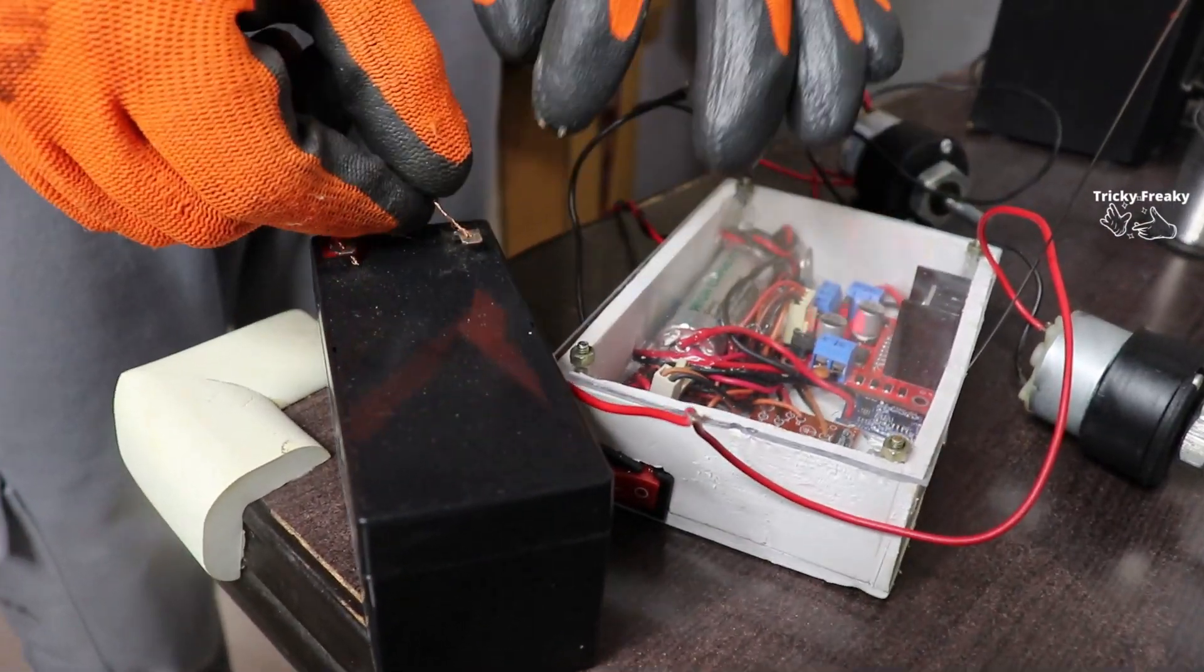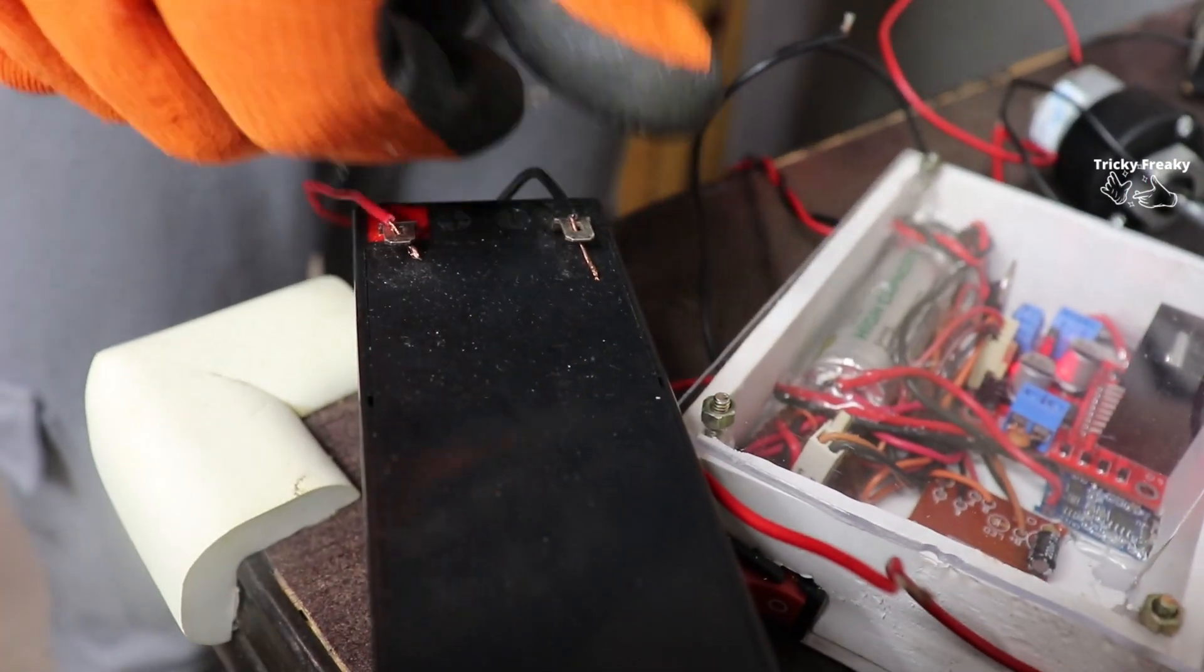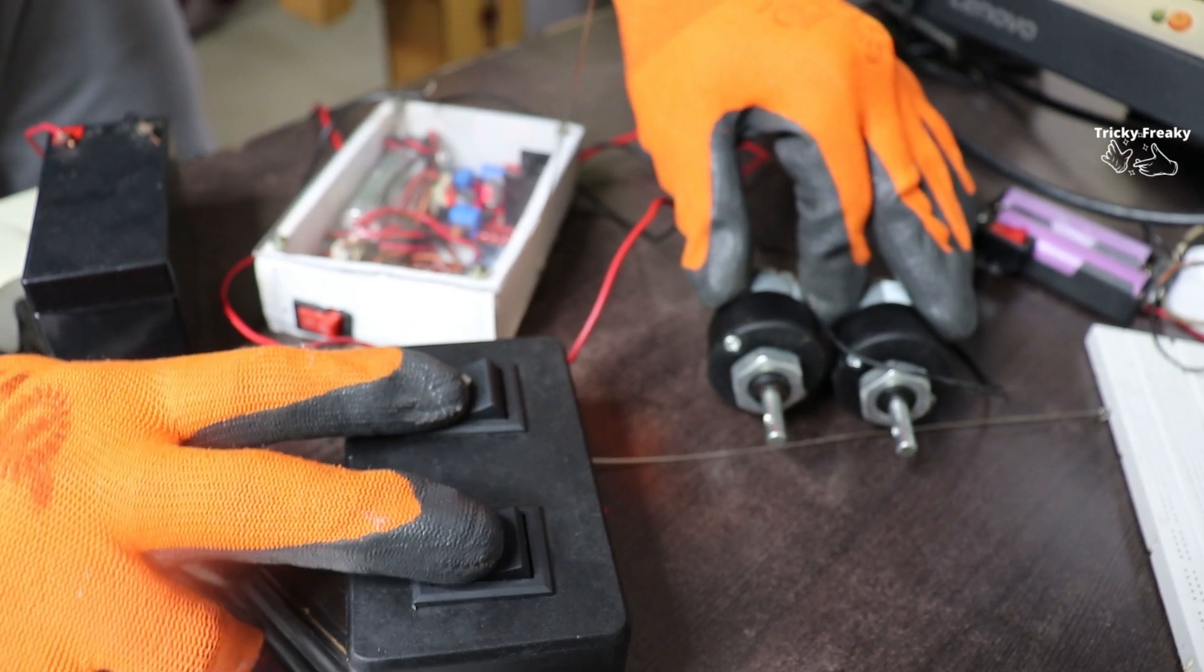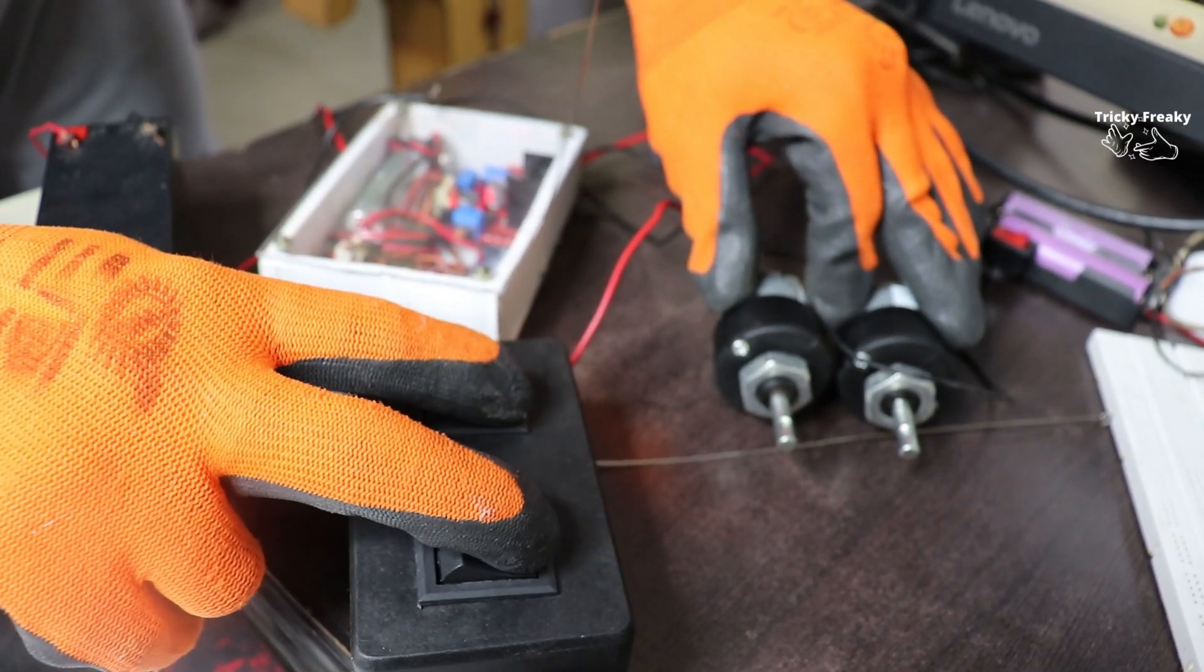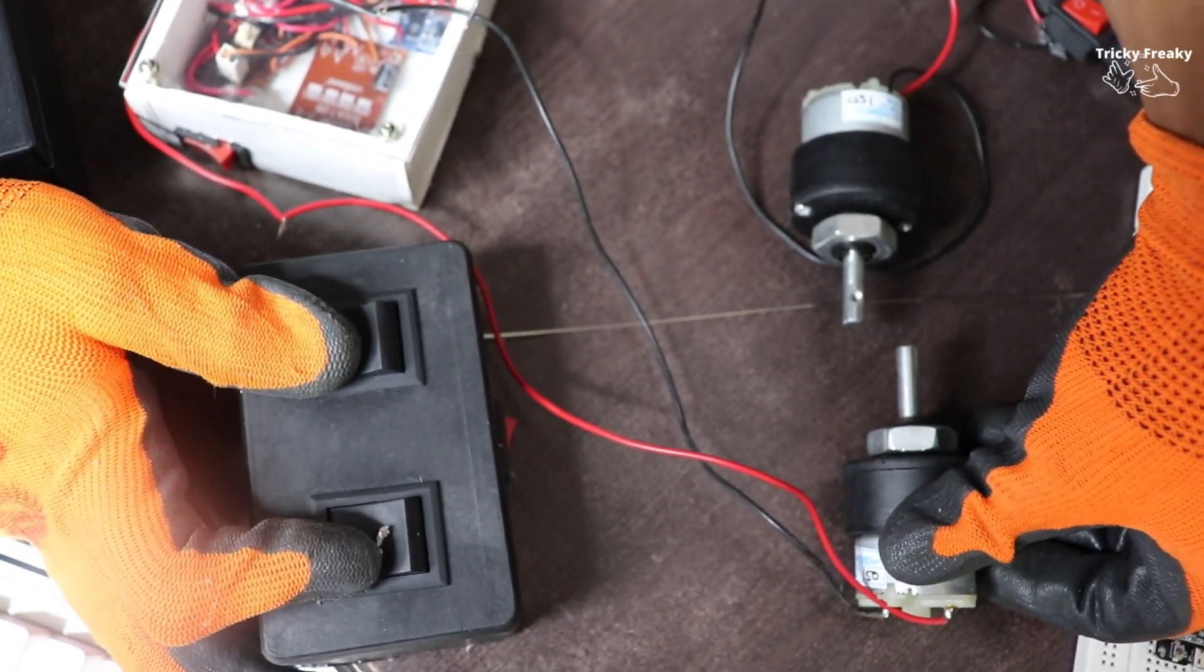All right, it's time for testing. I'll carefully connect the plus and minus terminals of the heavy battery, and then press both buttons simultaneously to move both motors forward. When I press the other two buttons together, they move in reverse. This shows that our transmitter and receiver are working correctly.